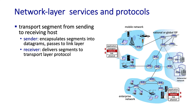We'll study the format of the IP datagram shortly. It'll include some network-wide addressing information — we'll cover IP addresses in great detail — and then passes the datagram on to the link layer, which will be responsible for transmitting the datagram to the next hop.